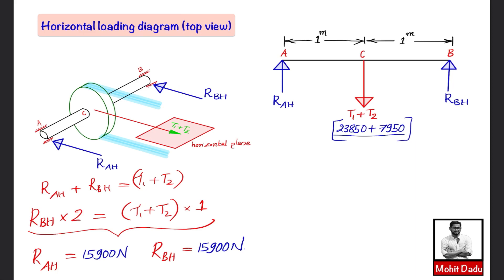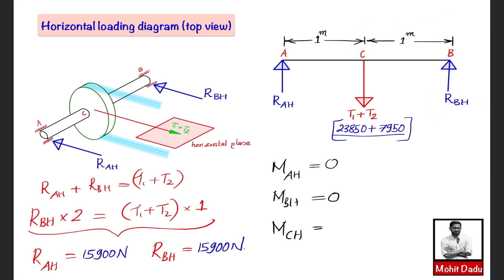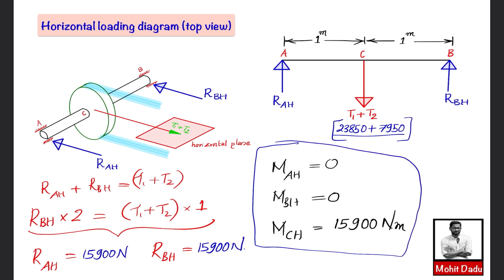For the horizontal loading diagram, bending moments at A and B are zero (no outward forces). At point C, standing at C and looking right, the moment from RBh is: MCh = 15900 N × 1 m = 15900 newton-meters.